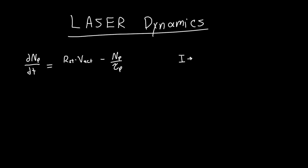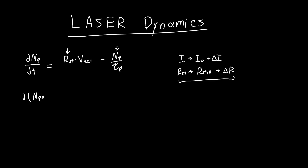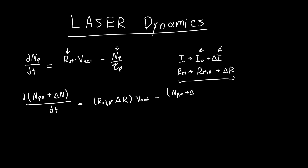When we apply some DC current plus some change in that current, every component is going to have a DC term plus some AC small-signal change. So we can rewrite the equation by blindly plugging in this fact. The time derivative of the DC term plus d(delta_N)/dt equals our stimulated emission DC component plus AC component, times the active region volume — which doesn't change as a function of time — minus the photon count, which also has a DC term and an AC term. The time derivative of something constant with time is just zero, so that drops out.